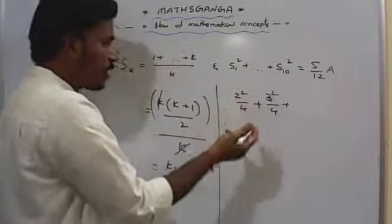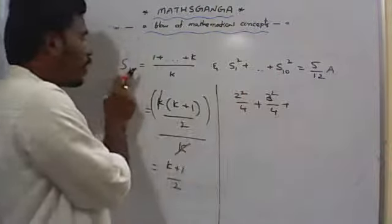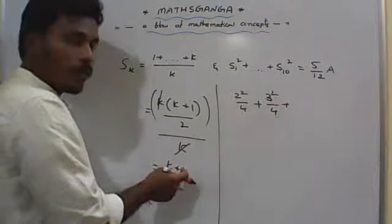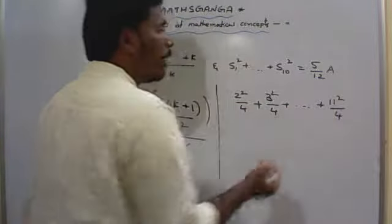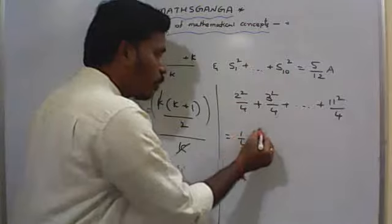In the same manner up to S10, if you replace k with 10, 10+1 is 11. (11/2)² is nothing but 11²/4.